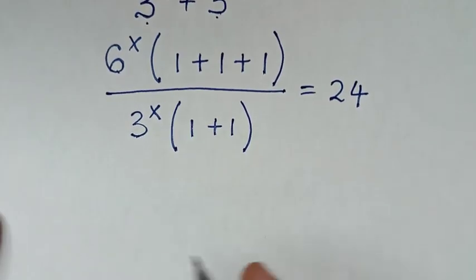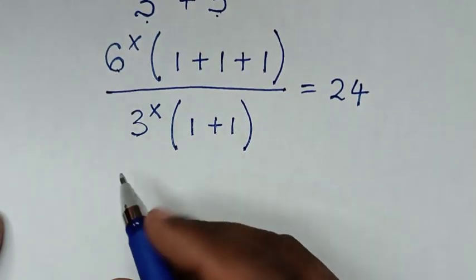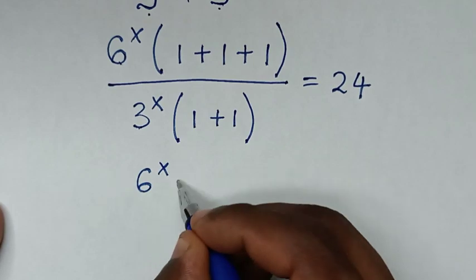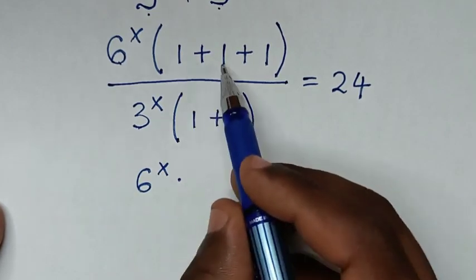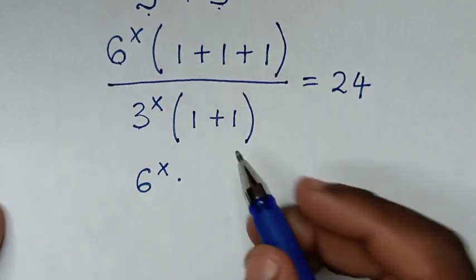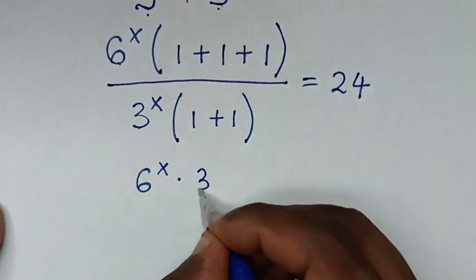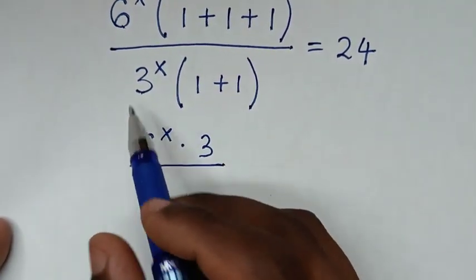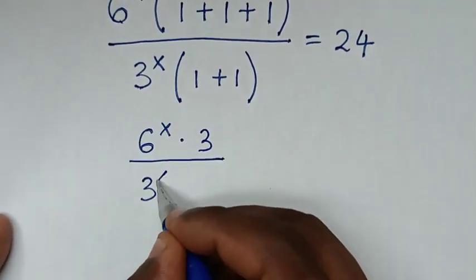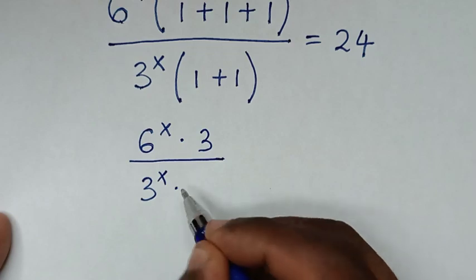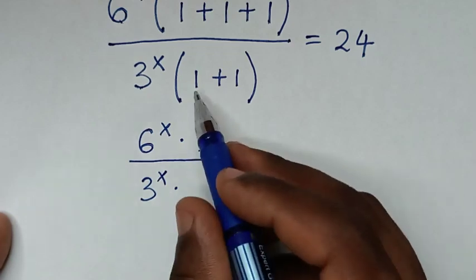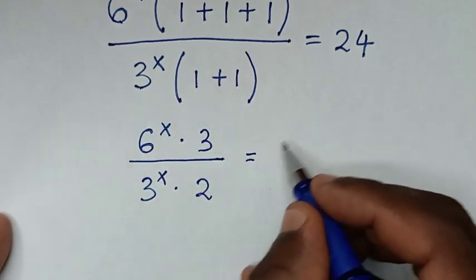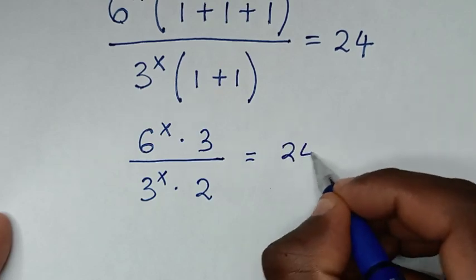Then in the next step it will be 6 power x times 1 plus 1 plus 1 which is 3, over the denominator 3 power x times 1 plus 1 which is 2, equal to 24.